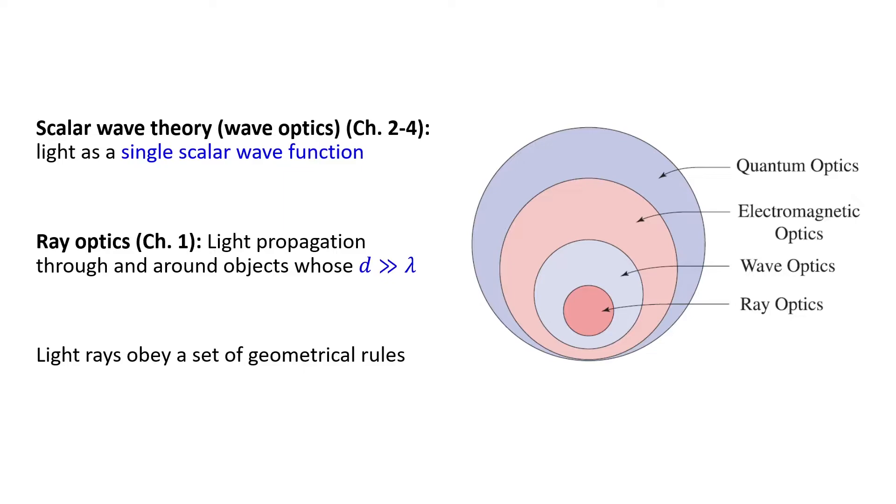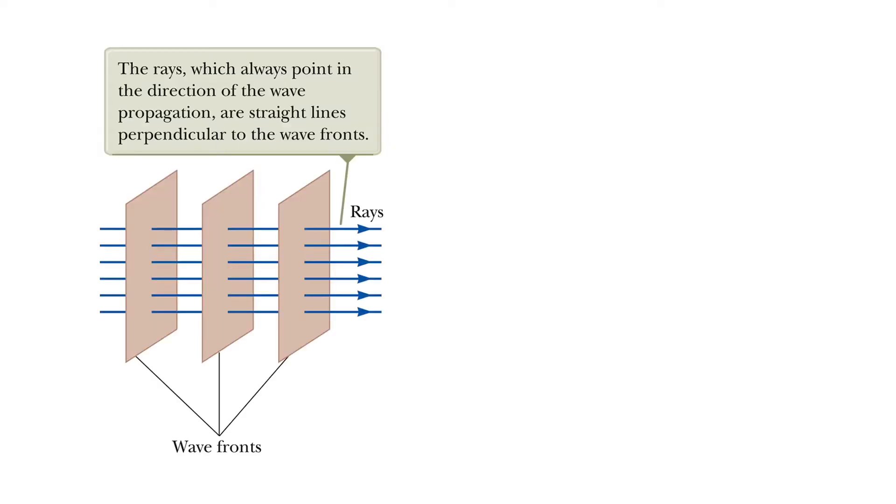Now the question is this. What is a ray? Ray is a straight line with an arrow which shows the direction of propagation. From introductory physics courses, we are familiar with plane waves and their wave fronts. The rays are straight lines perpendicular to these wave fronts, as you see in this figure.